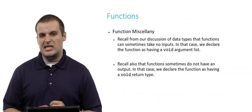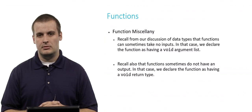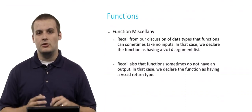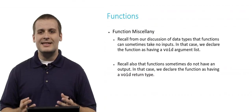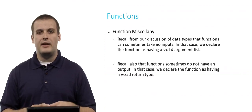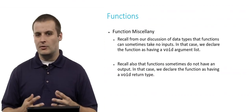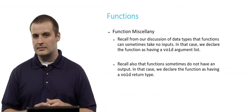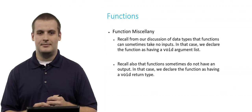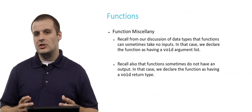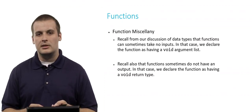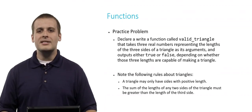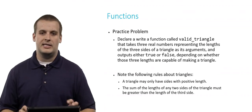A couple of miscellaneous points about functions before we conclude this section. Recall that functions can sometimes take no inputs — in that case, we declare the function as having a void argument list. The most common function we've seen so far that takes a void argument list is main. Also recall that functions sometimes don't have an output — in that case, we declare the function as having a void return type.